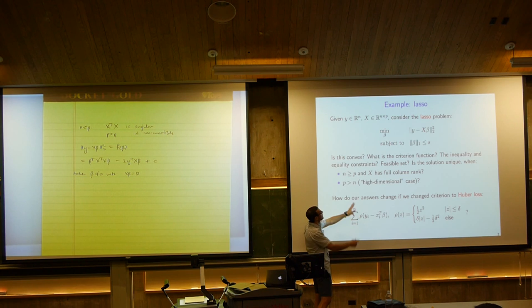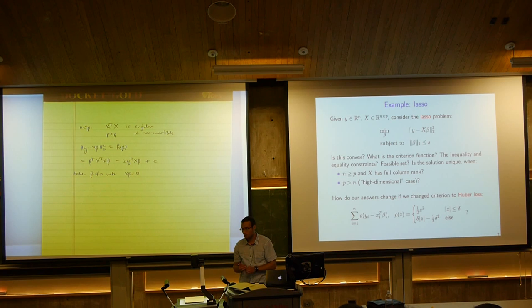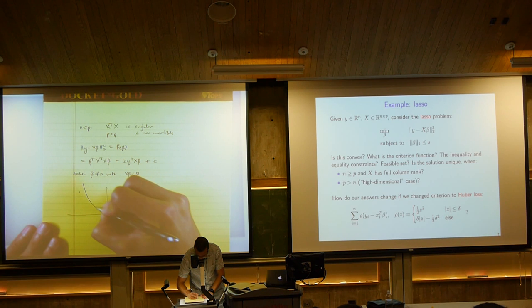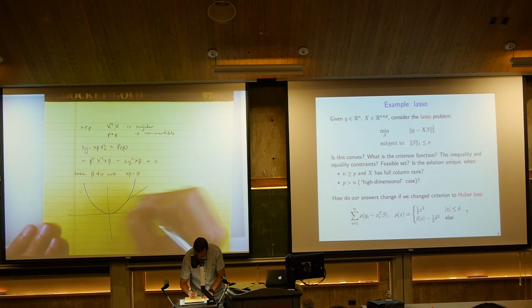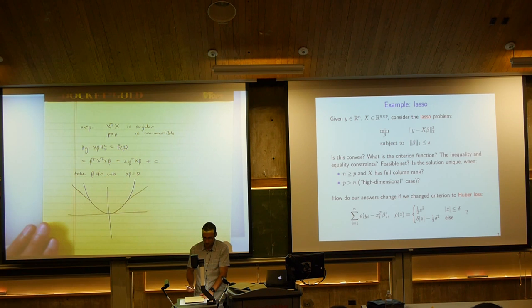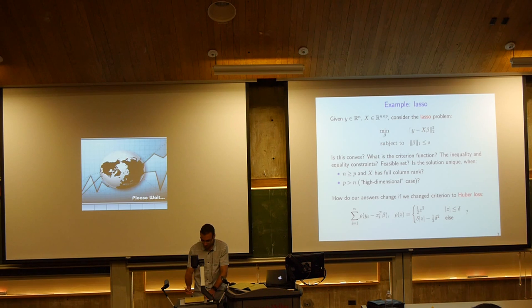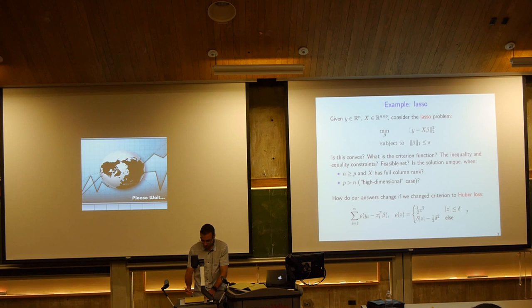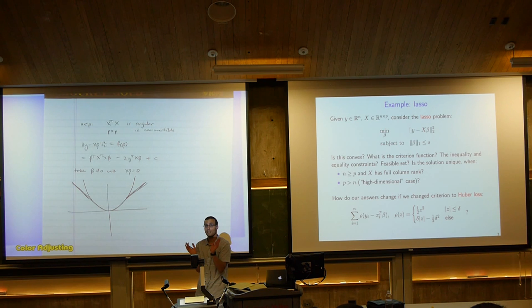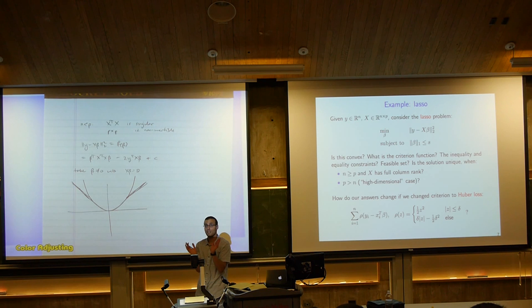Huber loss is another variant: it takes the squared error loss and linearizes it beyond some threshold, making the problem more robust against outliers. With squared error, large residuals pull the regression line; Huber loss limits that effect. Huber loss is still convex — we do the clipping in a way that preserves convexity.